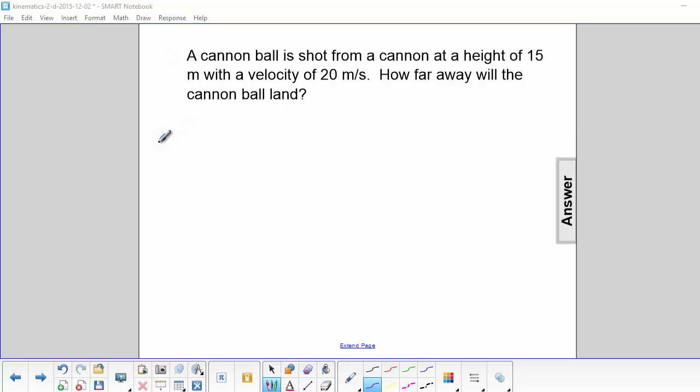A cannonball is shot from a cannon at a height of 15 meters with a velocity of 20 meters per second. How far will the cannonball land?